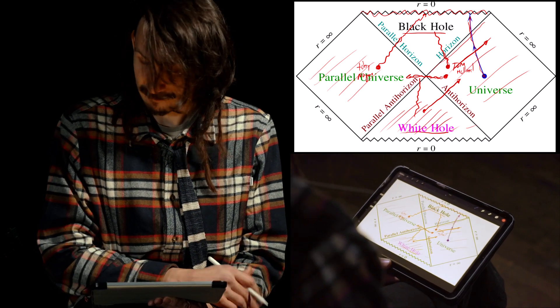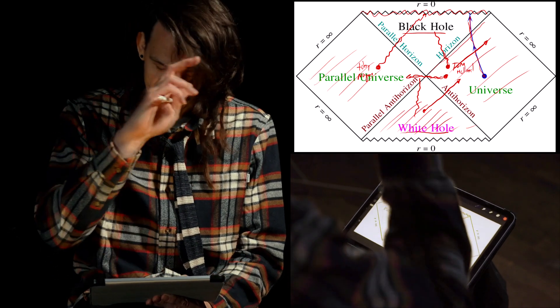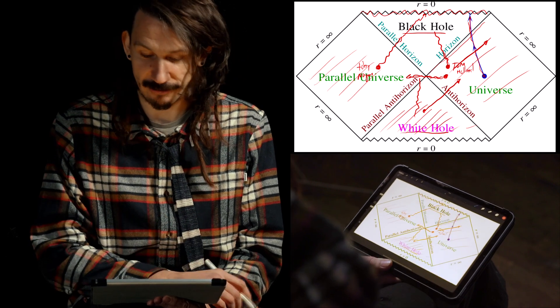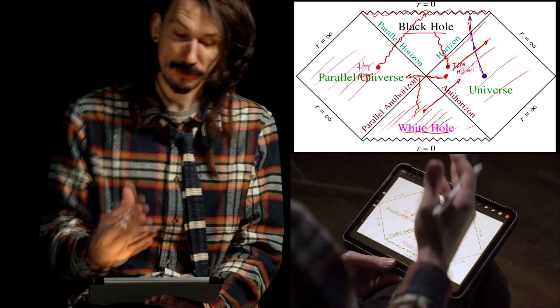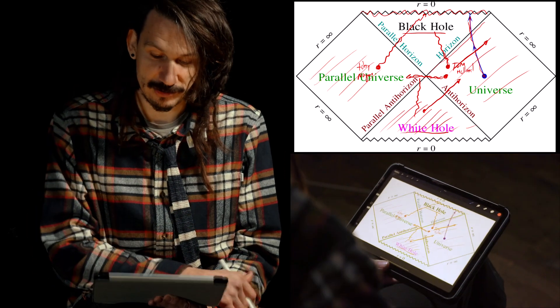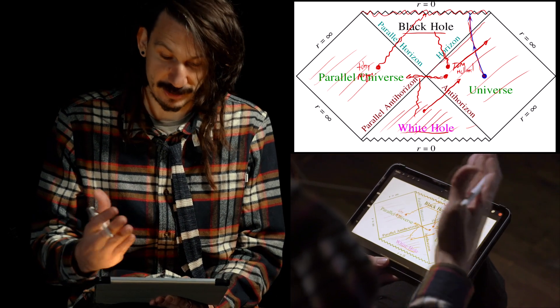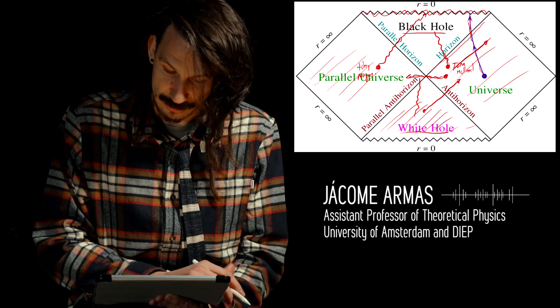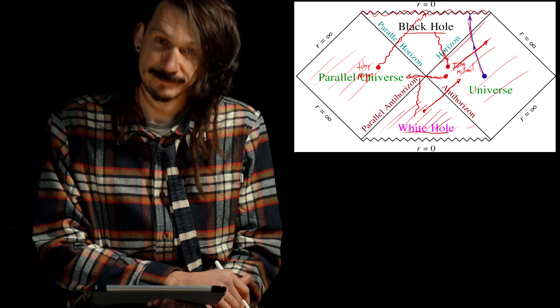This is again a possible picture, as extrapolated from Einstein's equations. But we have no idea whether it's true or not, because as soon as we cross the event horizon, we cannot send any signal back into our universe or to the parallel universe, and therefore we have absolutely no idea what happens inside the event horizon and whether there's even a singularity at all. Most likely, this picture is not even correct, because we don't think there is actually a singularity inside the black hole.